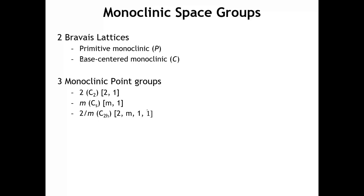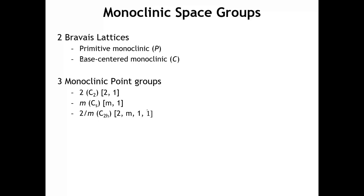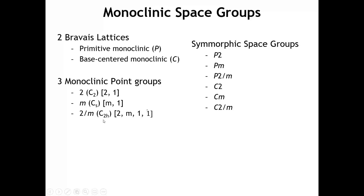Let's see how we combine point groups and Bravais lattices to get space groups, working through all monoclinic space groups. In the monoclinic crystal system there are two Bravais lattices: primitive and base-centered. There are three possible point groups: 2, m, and 2/m. Combining these gives six space groups: P2, Pm, P2/m from the primitive lattice, and C2, Cm, and C2/m from the base-centered monoclinic lattice.